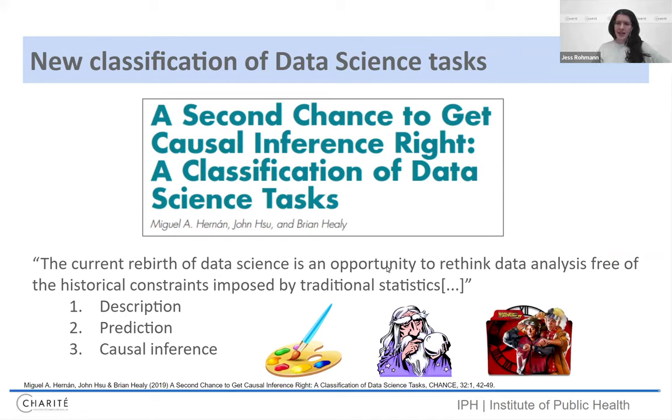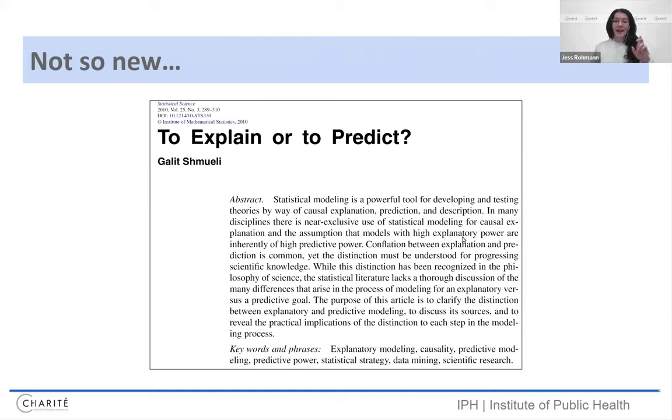So first, these three tasks of health data sciences. There was a nice paper by Miguel Hernan. You'll see his name popping up a lot today. He's an epidemiologist who's really pushing for DAGs in applied research in our field and has done a lot of really great methodological research as well, and he wrote this nice paper with John Sue and Brian Healy called A Second Chance to Get Causal Inference Right, A Classification of Data Science Tasks, and here they delineate description, prediction, and causal inference as three fields that are useful. Classification is sometimes a bit arbitrary, but sometimes also useful in helping inform how we design, analyze, but also interpret our study findings.